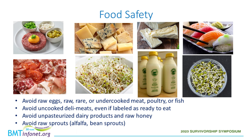Avoid unpasteurized dairy products such as milk or cheese. Examples of cheeses often made with unpasteurized milk include brie, camembert, blue cheese, and queso fresco. In the United States, pasteurized dairy products must be labeled as such — make sure to read the label. Avoid raw eggs; some dressings or sauces such as Caesar salad and hollandaise can contain raw egg. Always wash vegetables and produce, even when bags are labeled as pre-washed or ready to eat, as there have been several outbreaks related to these products.